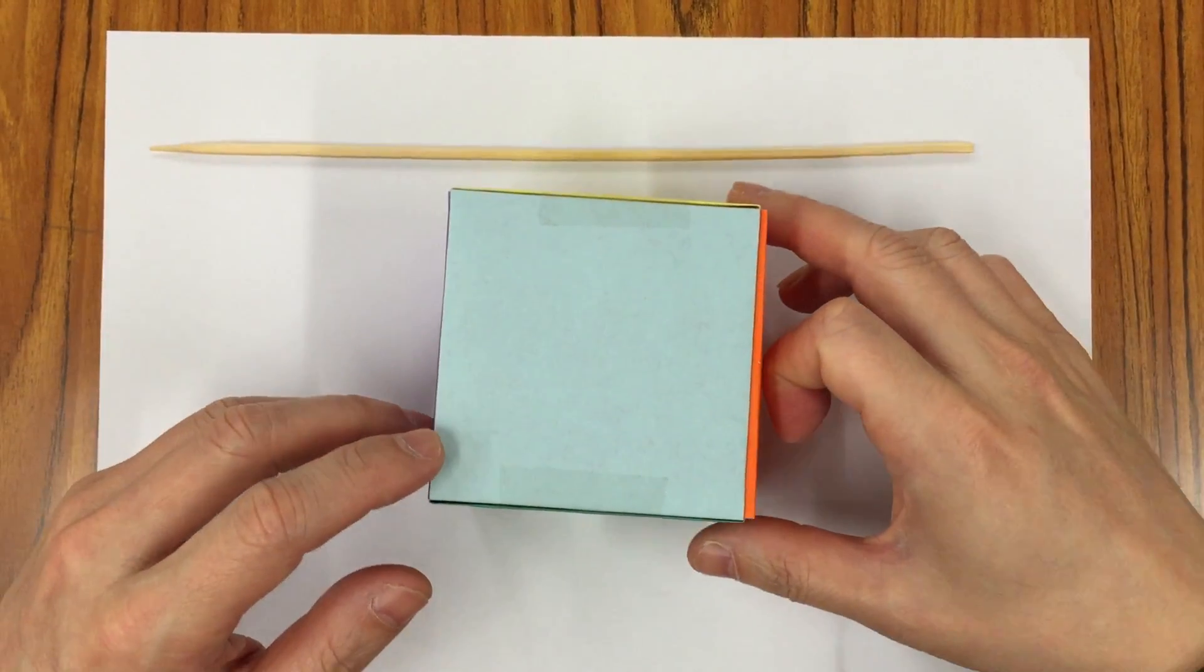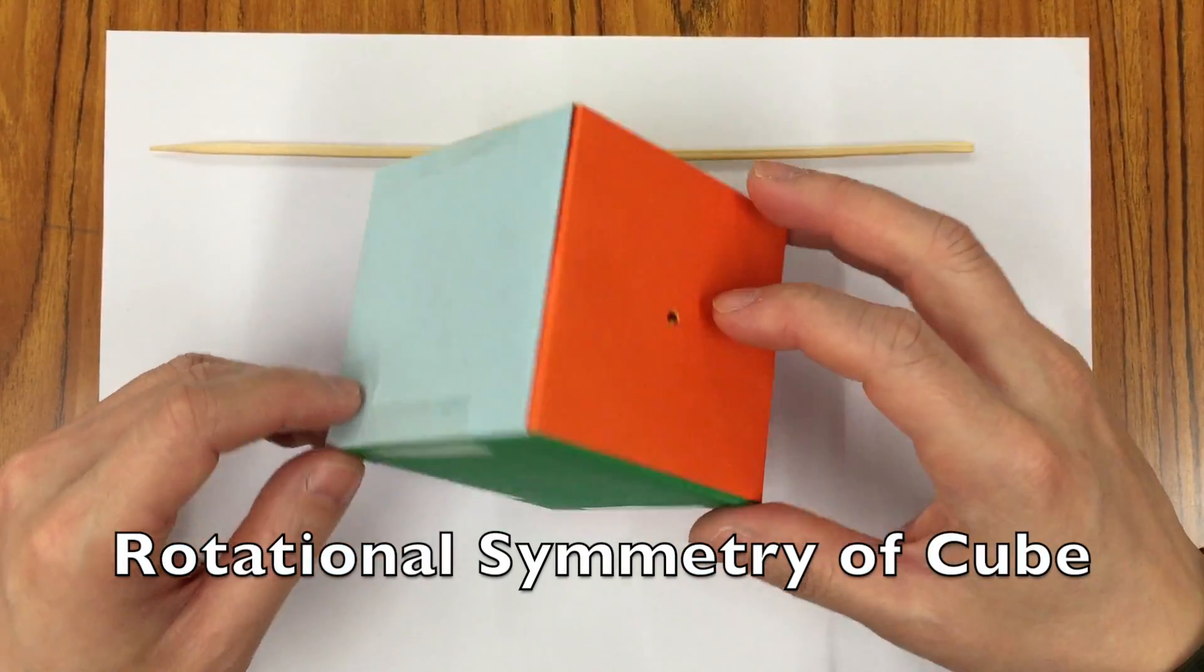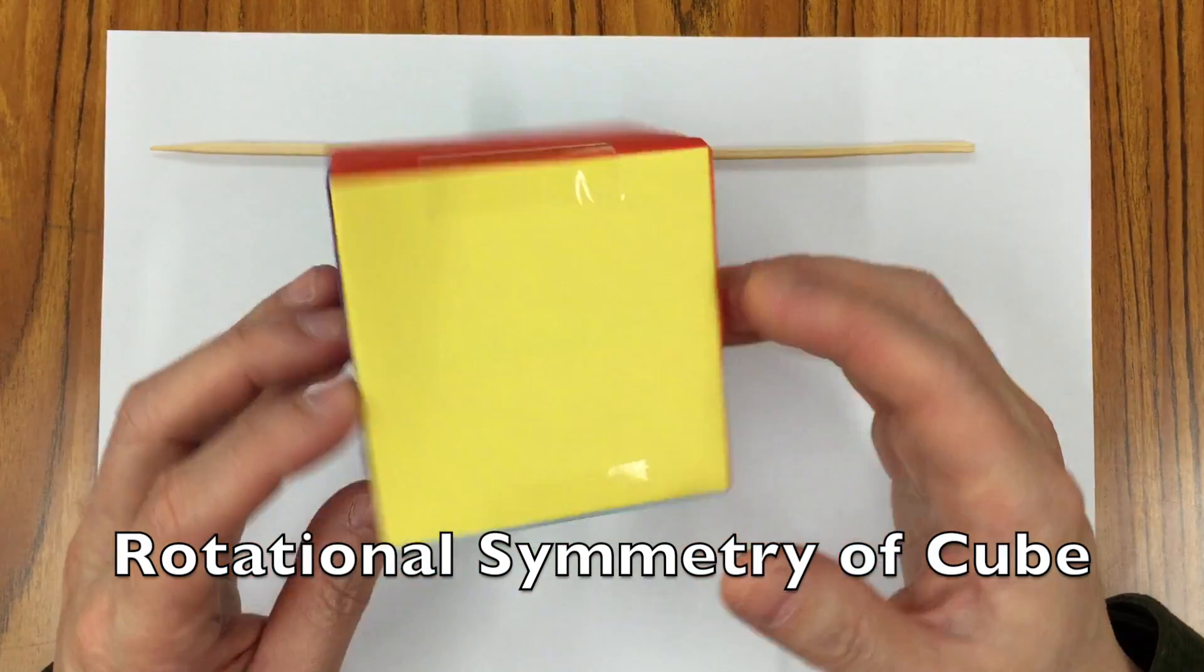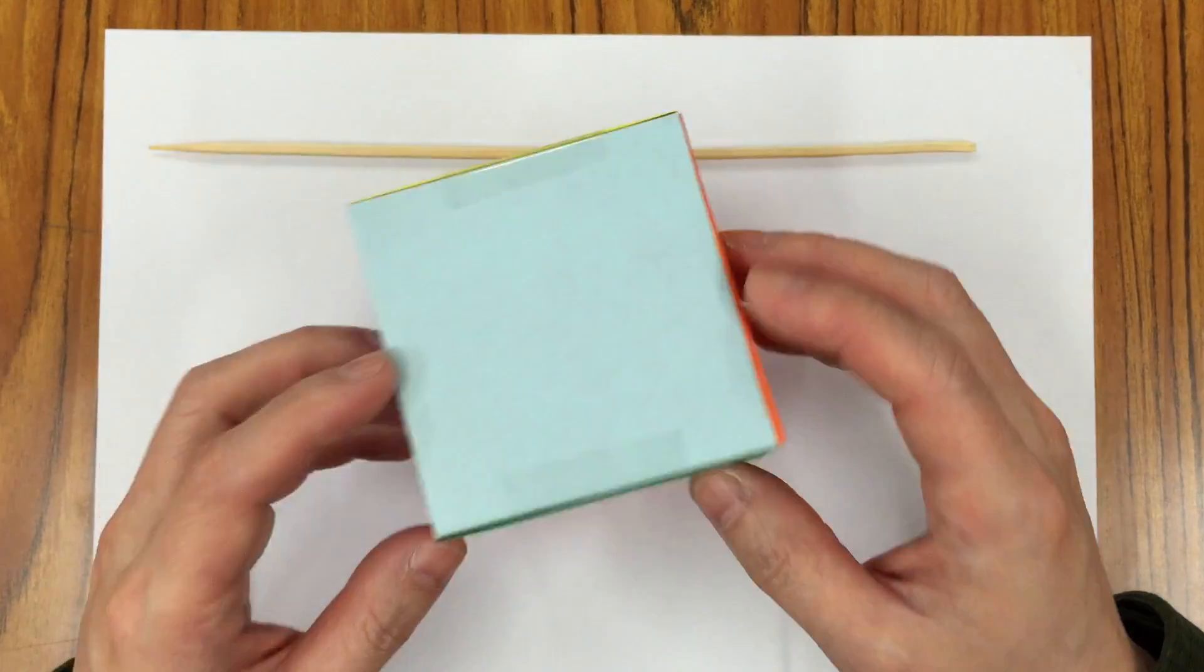And now we are going to investigate the rotational symmetry of a cube. This is a cube with six faces.